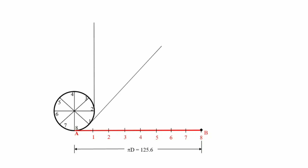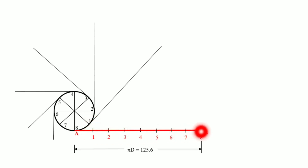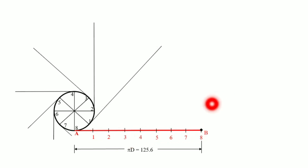At point 1 we draw the tangent line perpendicular to the diameter at that point. Similarly, we draw tangent lines at points 2, 3, 4, 5, 6, and 7. Once all tangent lines are drawn, when point 1 on the thread overlaps with point 1 on the circumference, the remaining thread length equals the distance from point 1 to B. We take this distance in the compass and mark it from point 1 along its tangent line to get point B1.